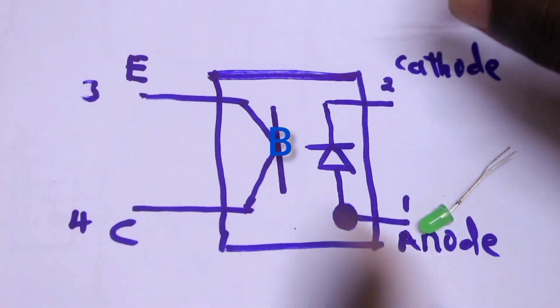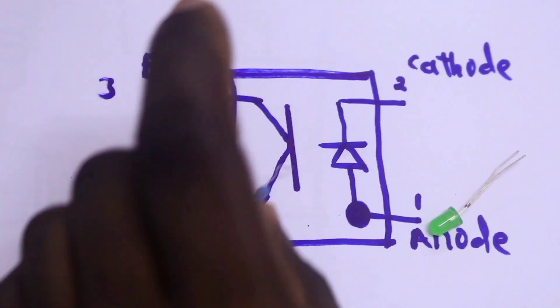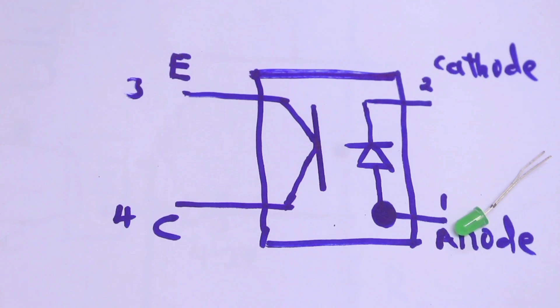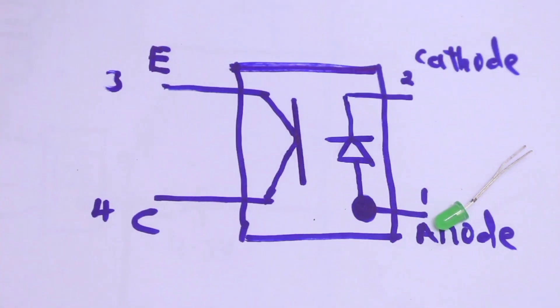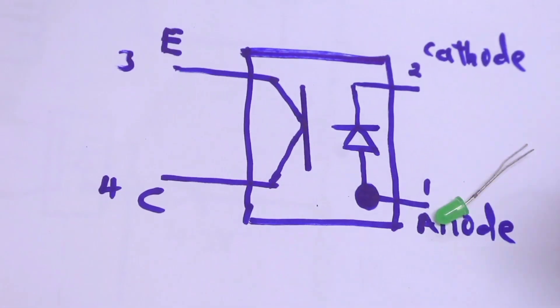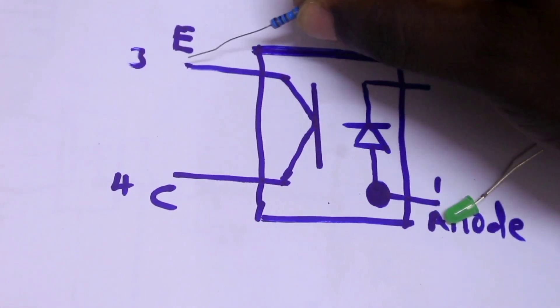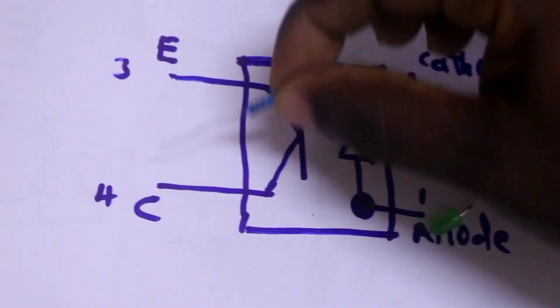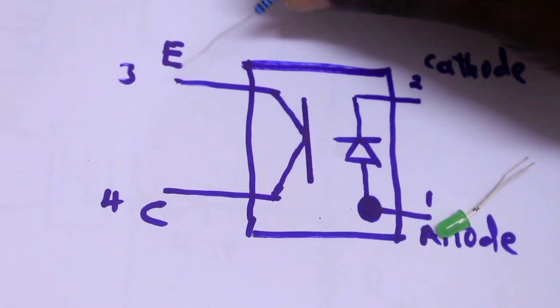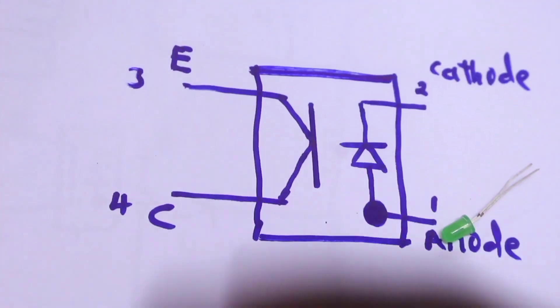But now the base here is opened or closed through light. So, this transistor, we call it a phototransistor, because when the base senses light from this LED, it will close the contact between the emitter and collector, and current will pass from the emitter to the collector.